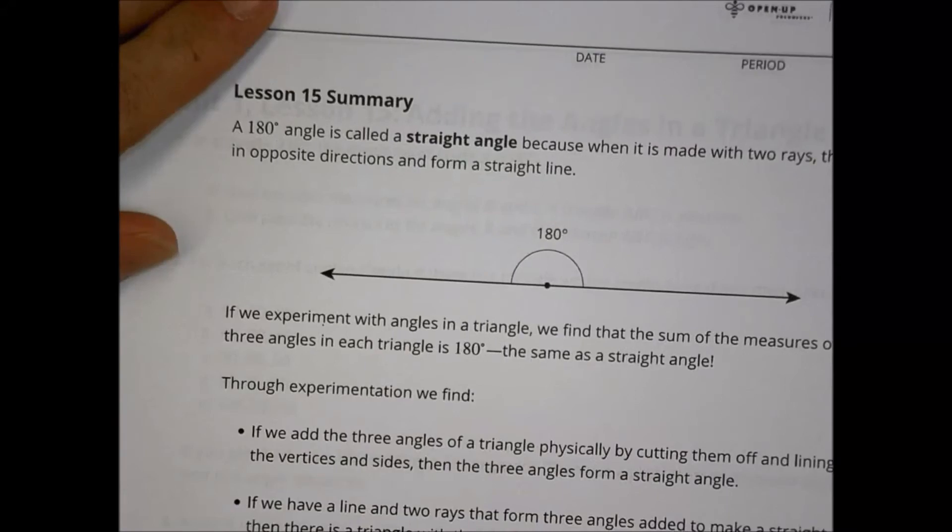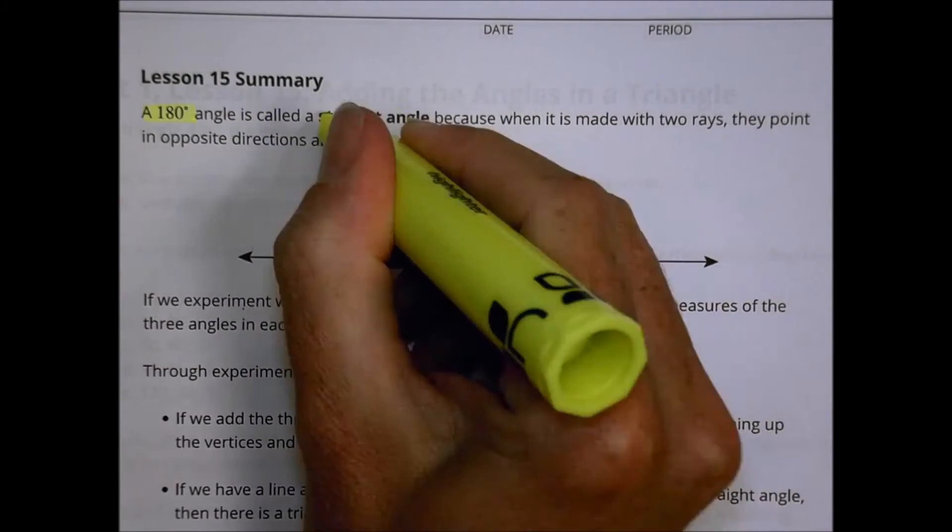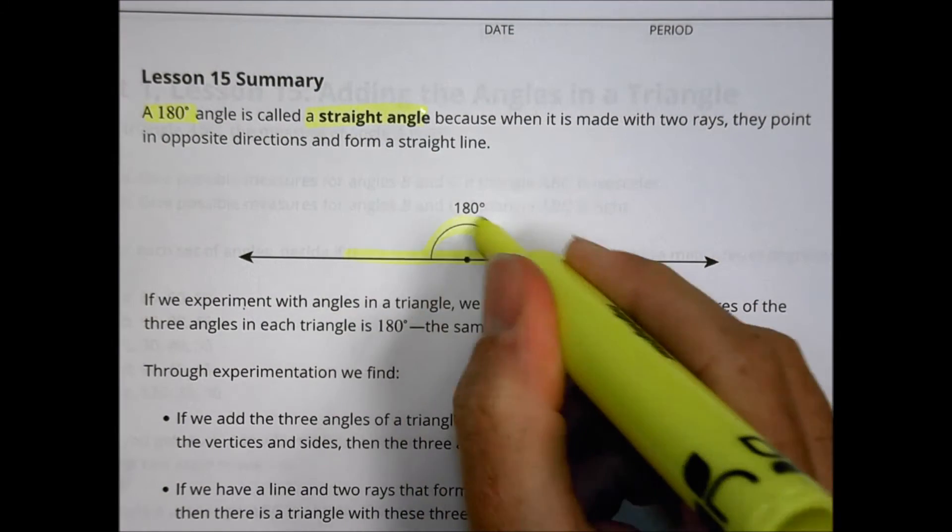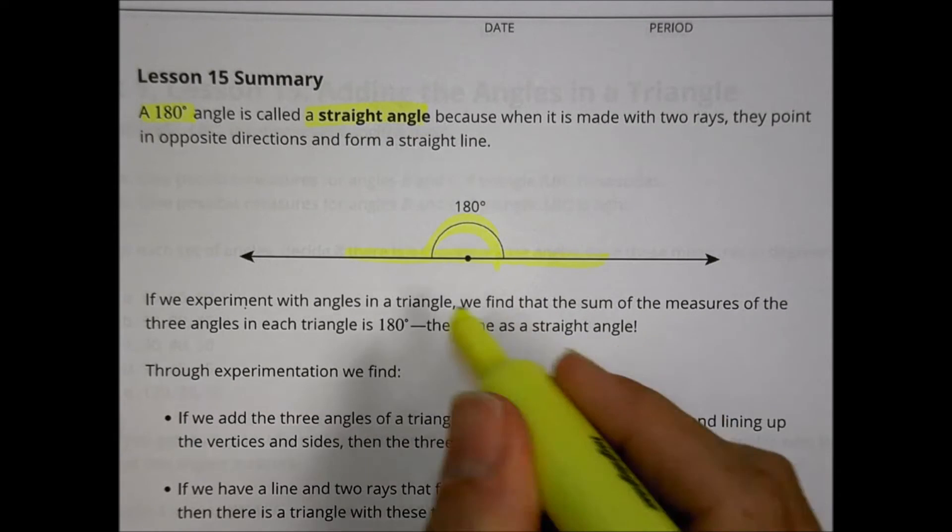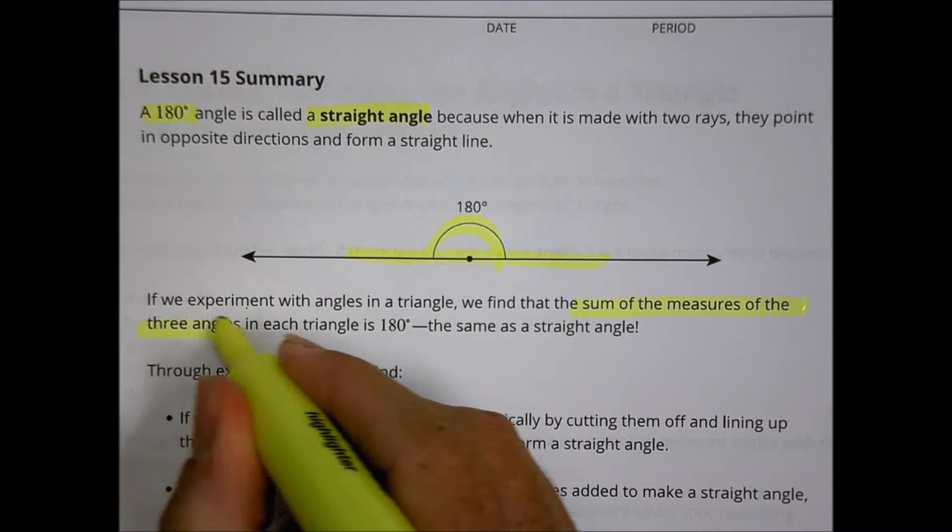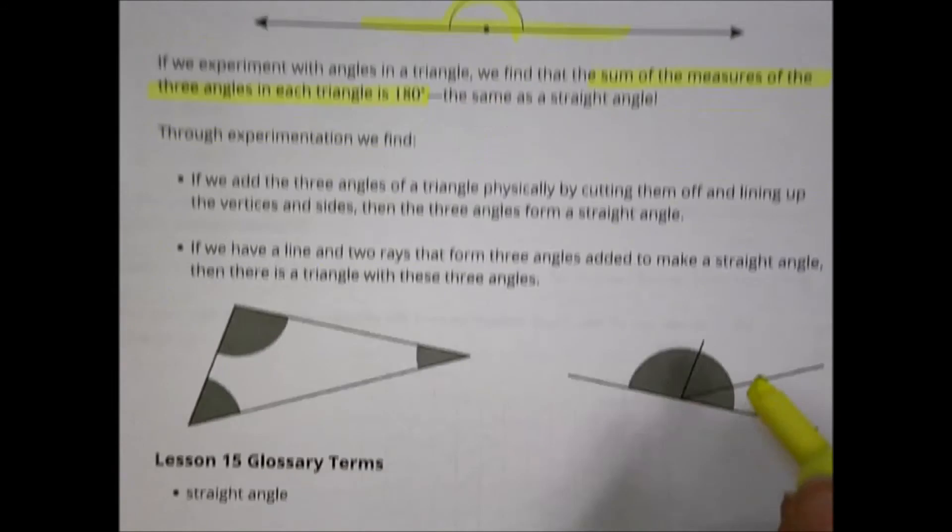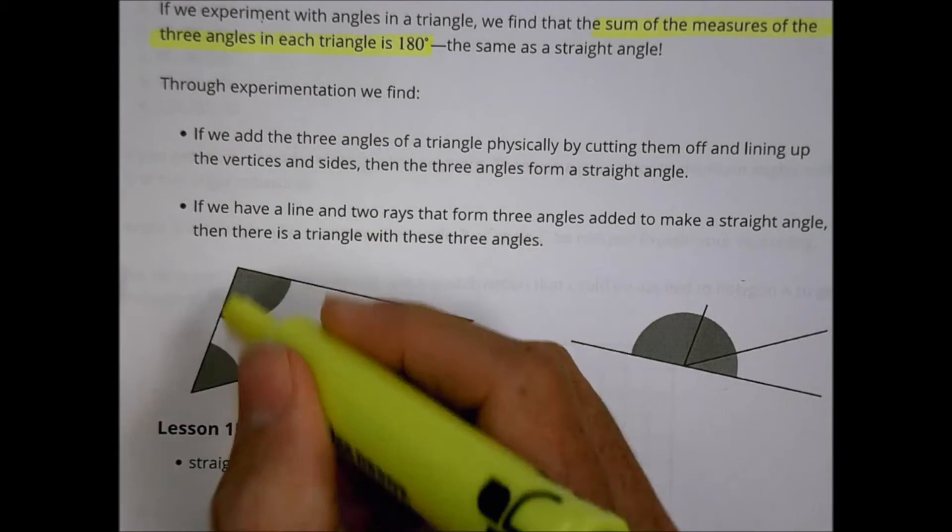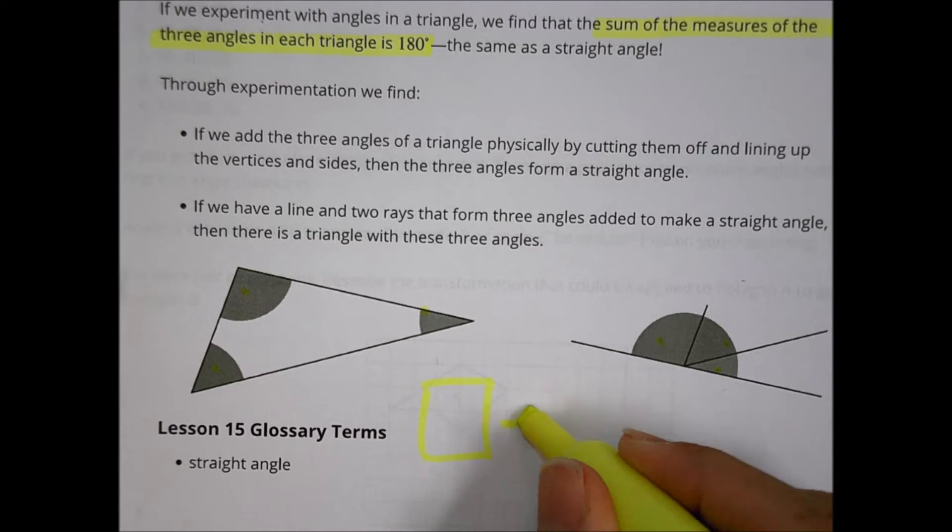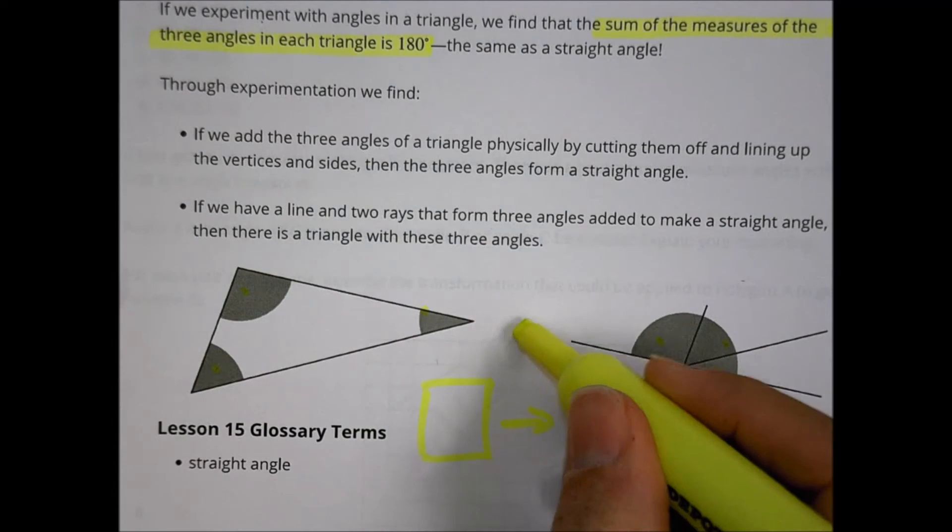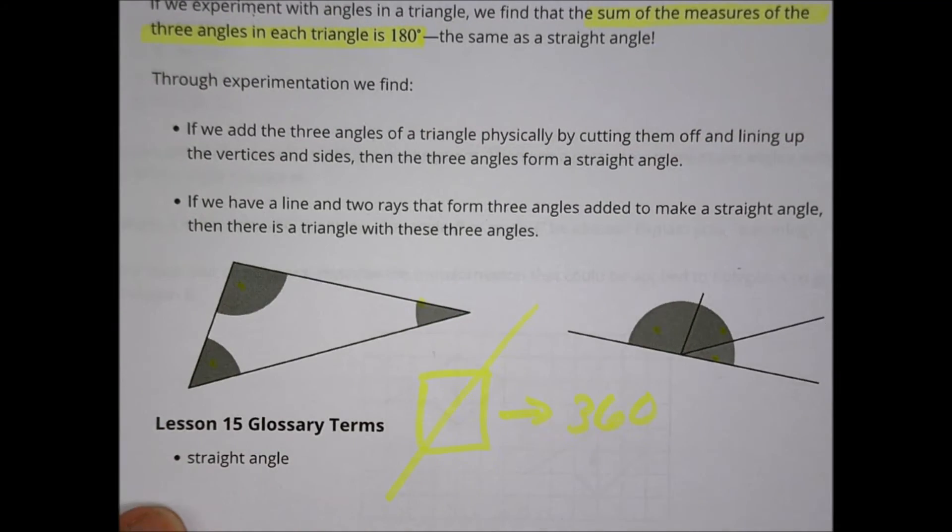So for our lesson summary, what we were talking about today is that 180 degree angle is called a straight angle. And that's this one right here when you have 180 degrees. With a triangle, when we experimented, we find that the sum of the measure of three angles in each triangle is 180 degrees, the same as a straight angle. And with the same with the quadrilateral, a square is going to end up with 360 of those, which makes sense because a square is half of a triangle. So 180 plus 180 is 360 degrees.